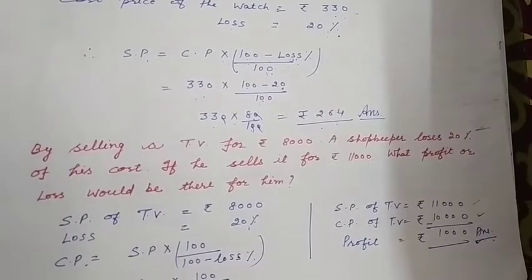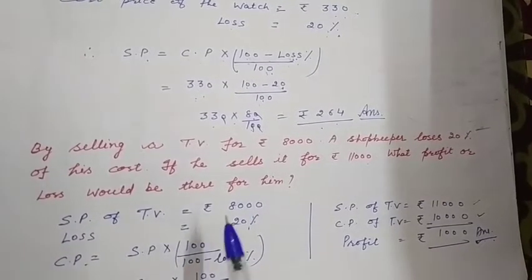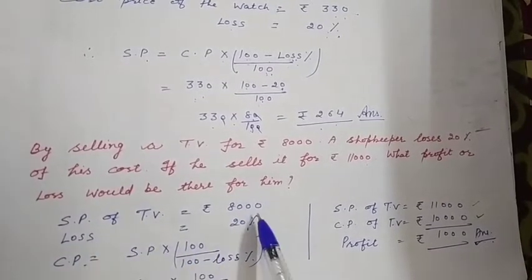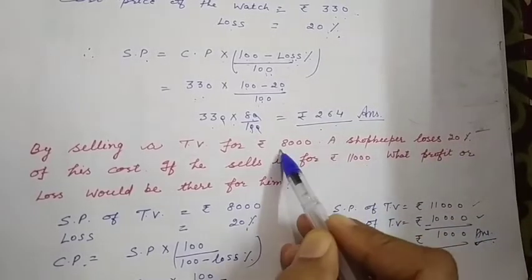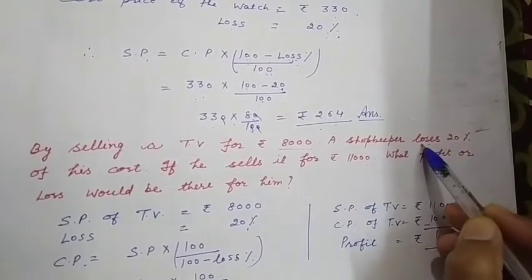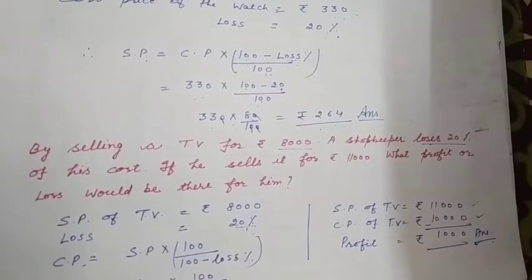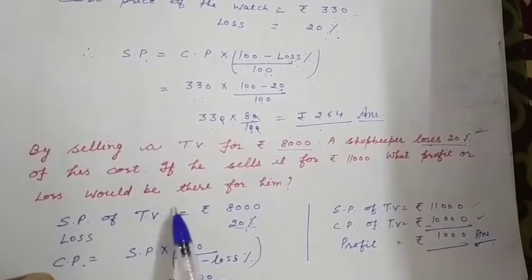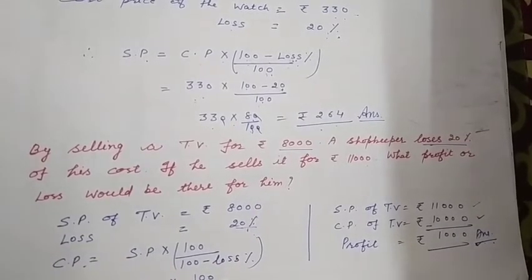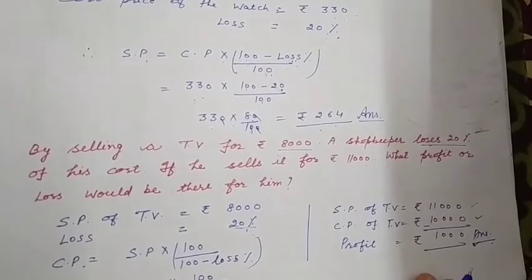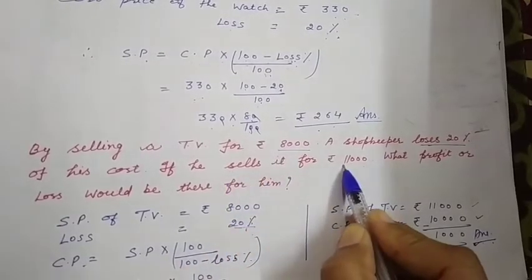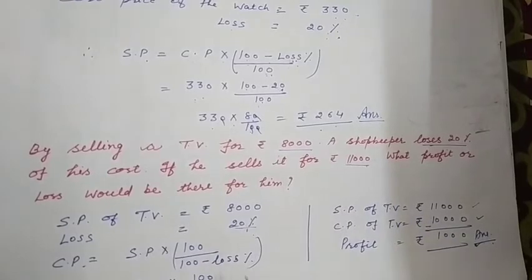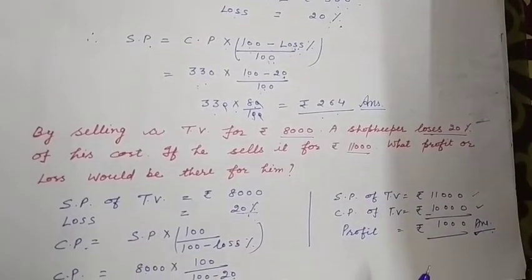इसमें selling price ₹8,000 दिया हुआ है और 20% loss दिया हुआ है। बाद में profit या loss निकालेंगे, लेकिन पहले cost price निकालनी पड़ेगी क्योंकि cost price हमारे पास नहीं है।